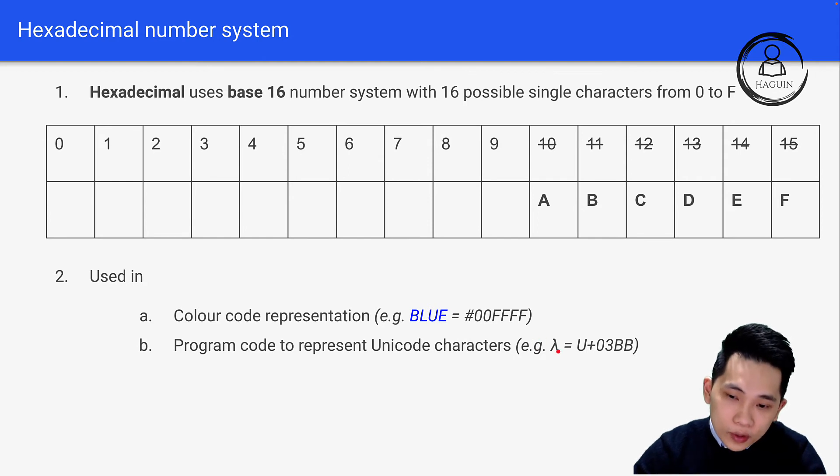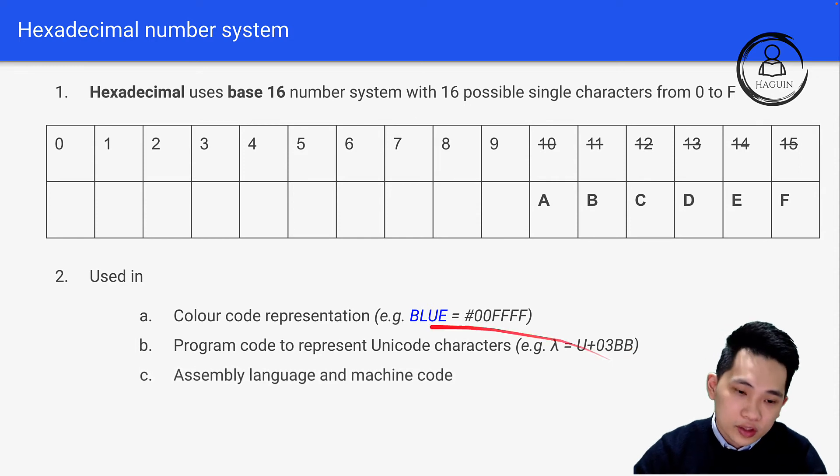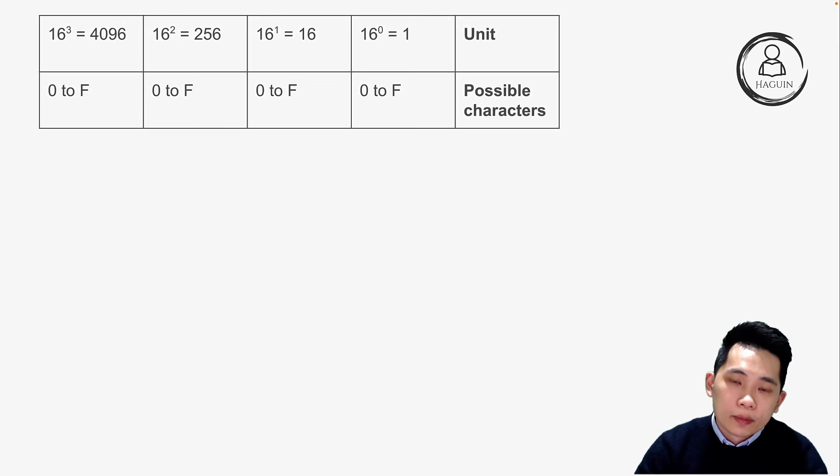Lambda stands for 03BB in hexadecimal number system. We use this in assembly language and machine code, which we'll cover in later chapters. Looking at the table for hexadecimal, we have 16 to the power of 0, 16 to power of 1, 16 to power of 2, 16 to power of 3. Since this exam doesn't allow calculator, remembering up to power of 3 is enough. The possible characters are 0 to F.